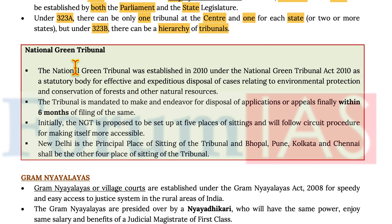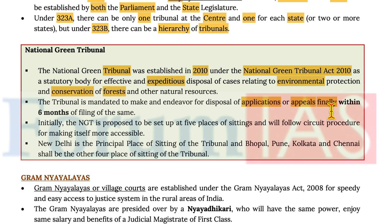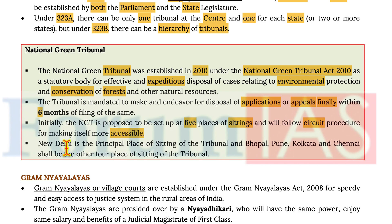The National Green Tribunal was established in 2010 under the NGT Act of 2010, making it a statutory body. It was set up for effective and expeditious disposal of cases relating to environmental protection and conservation of forests and other natural resources. The tribunal is mandated to make an endeavour for disposal of applications or appeals finally within six months of filing. Initially, the NGT is proposed to be set up at five places of sitting and will follow circuit procedure to make itself more accessible.